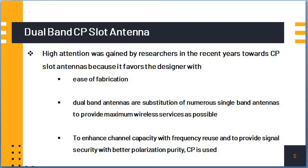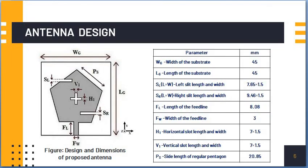The advantages of microstrip antennas is that it is easy to fabricate and dual band antennas are substitutions for number of single band antennas to provide maximum wireless services as possible.